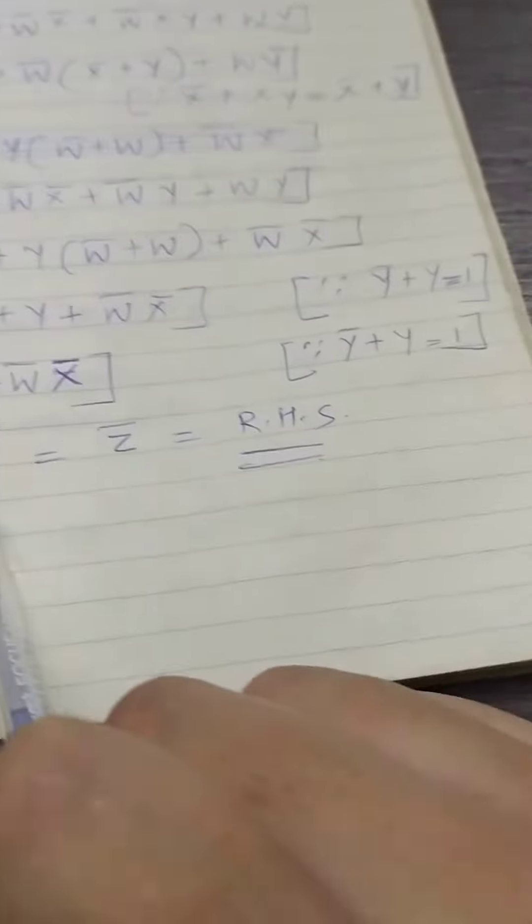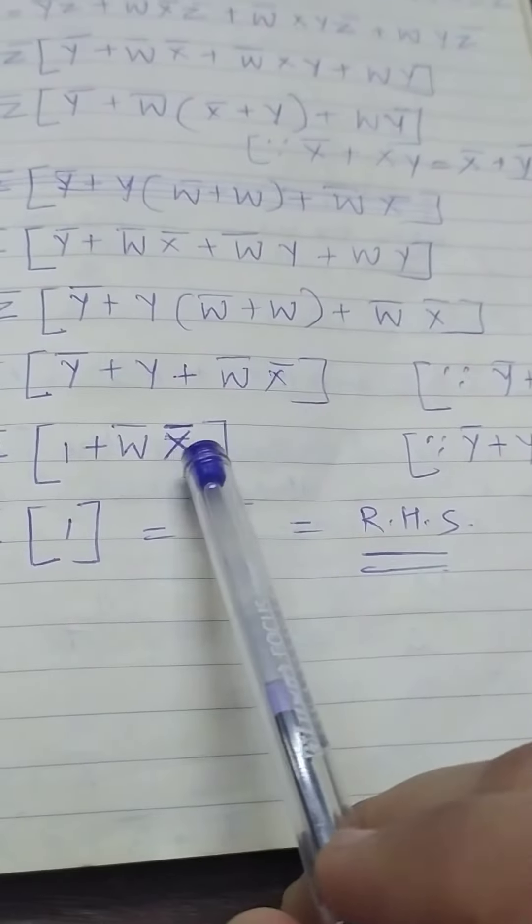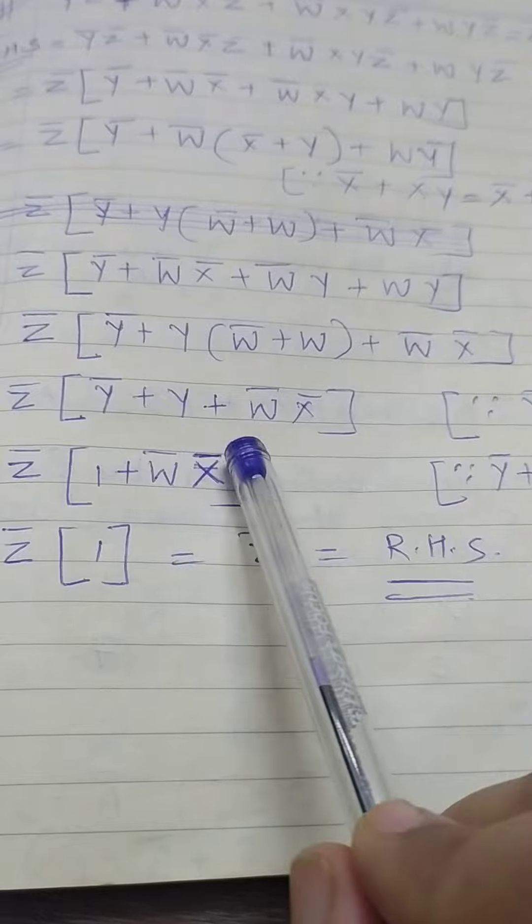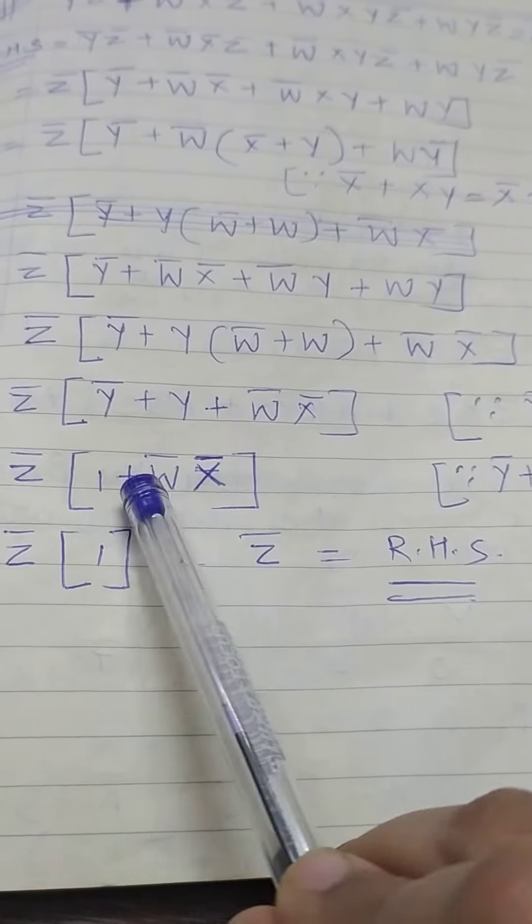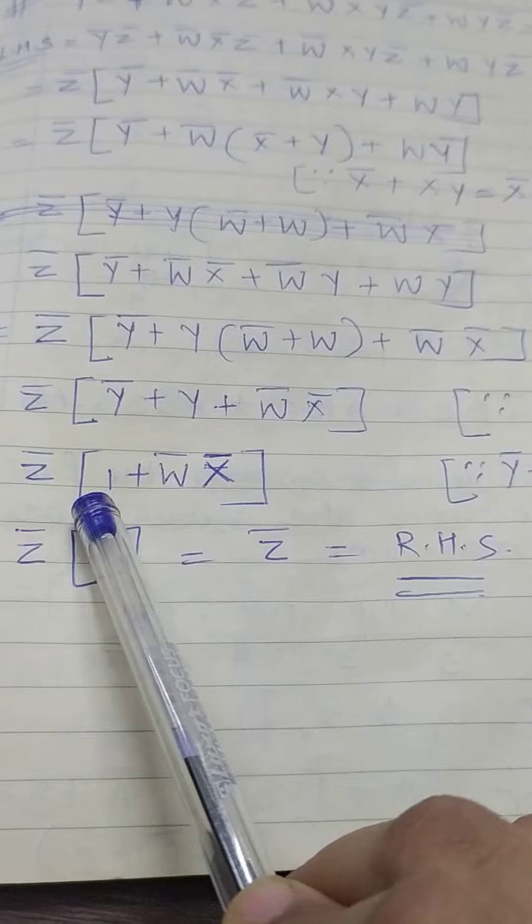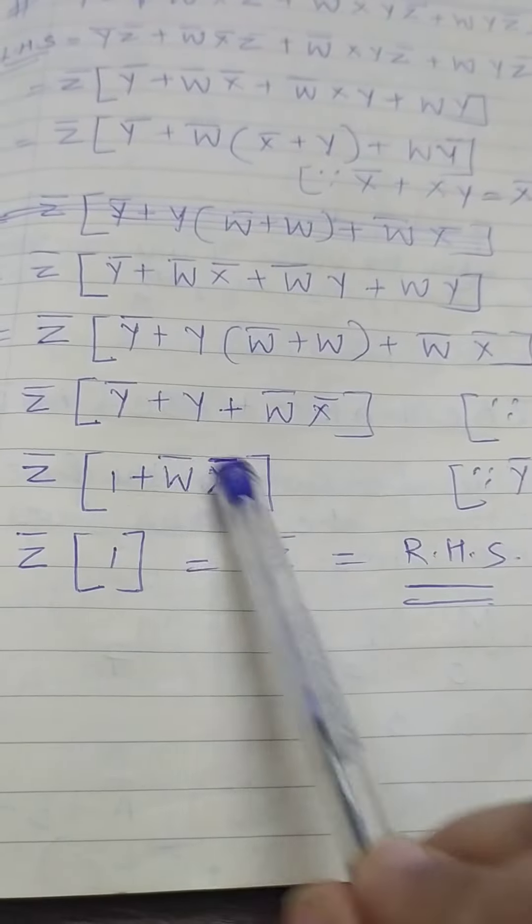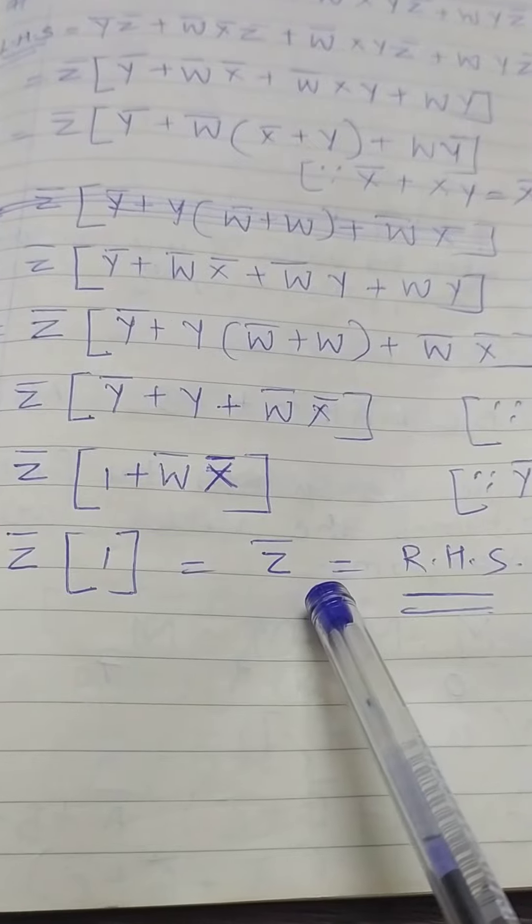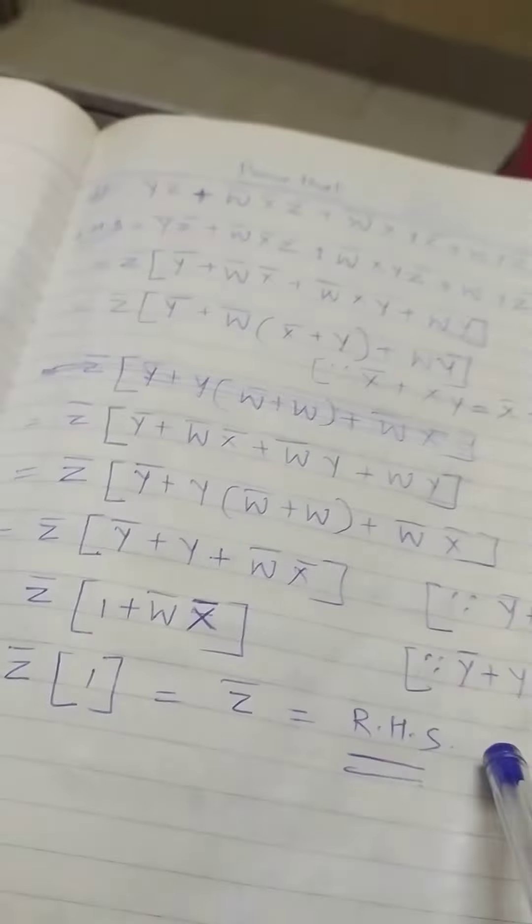This answer is 1. Why? Because when you get a term like that, 1 plus w̅x̅ equals 1, and the final answer is 1. There is a property in this case - you have to write it equal to 1. That equals z̅, so LHS equals RHS. Thank you.